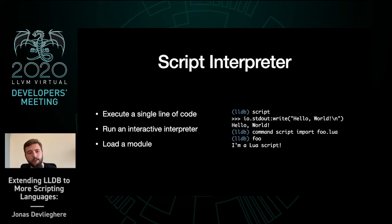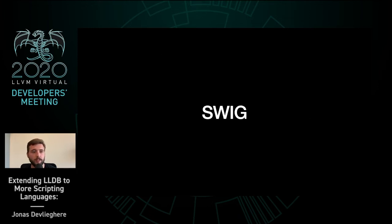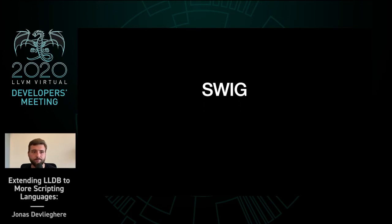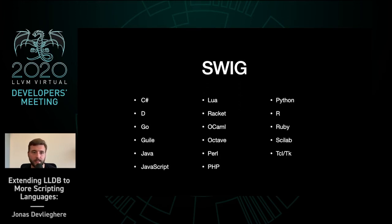Implementing just the plugin is not enough. Although we can now run Lua code from within the debugger, we can't yet script LLDB because we don't have access to the scripting bridge API. To expose LLDB's C++ API to Python, we use SWIG — the Simplified Wrapper and Interface Generator. It automatically generates glue code between languages, which is a lot less work than writing the bindings yourself.